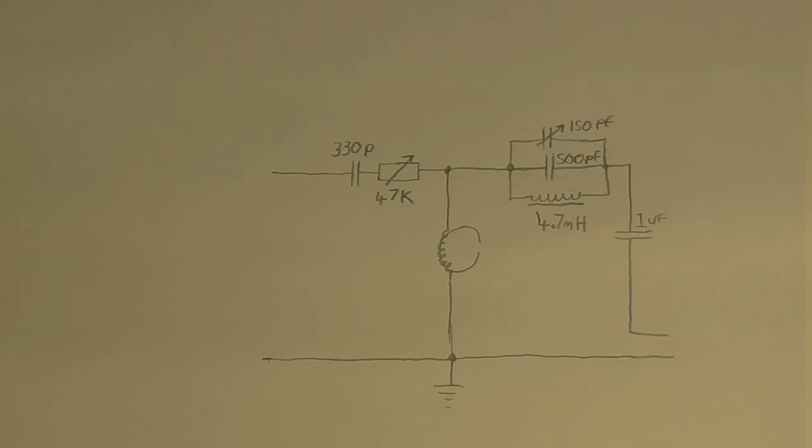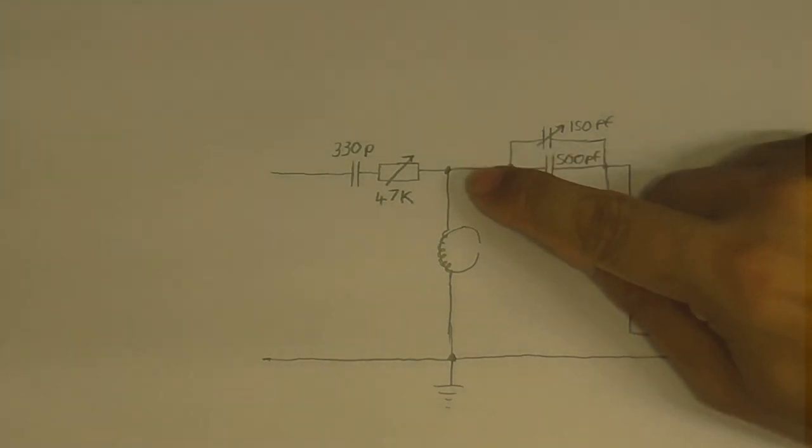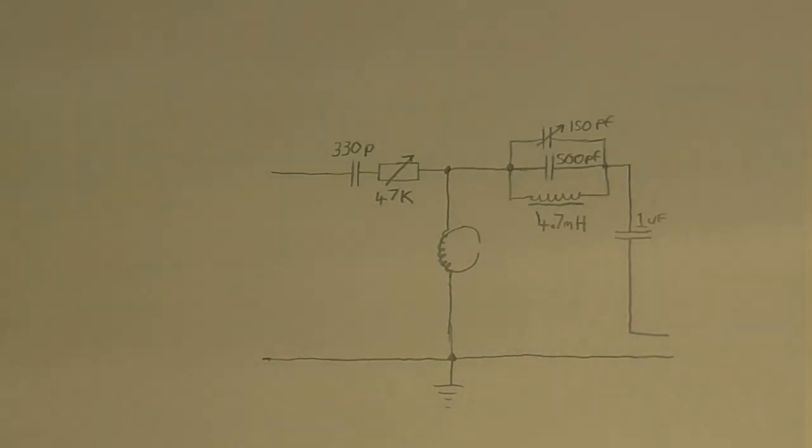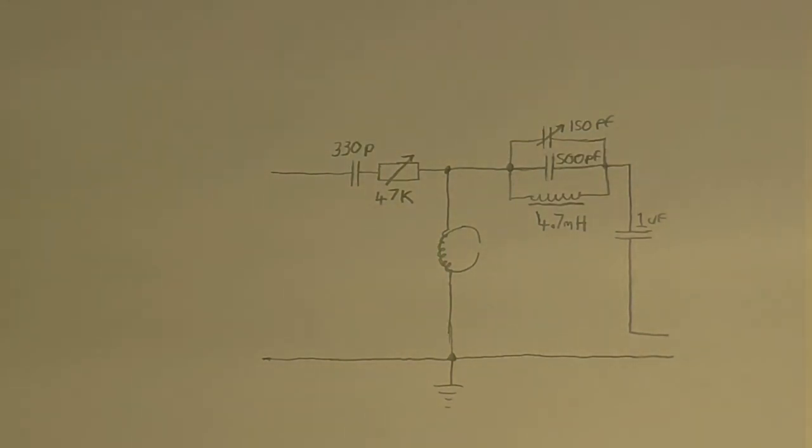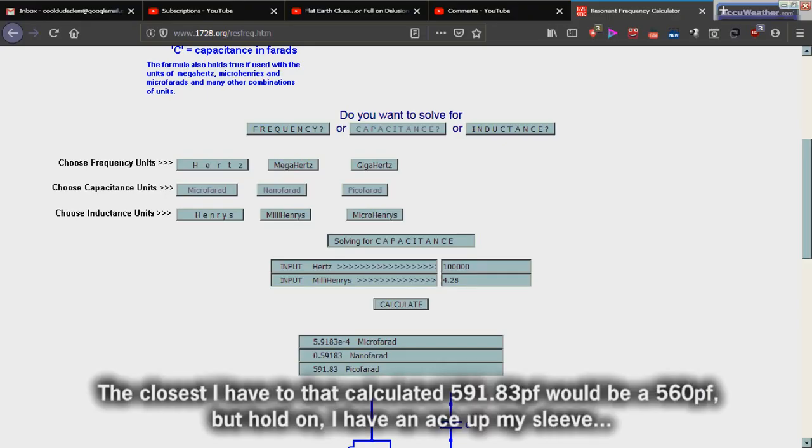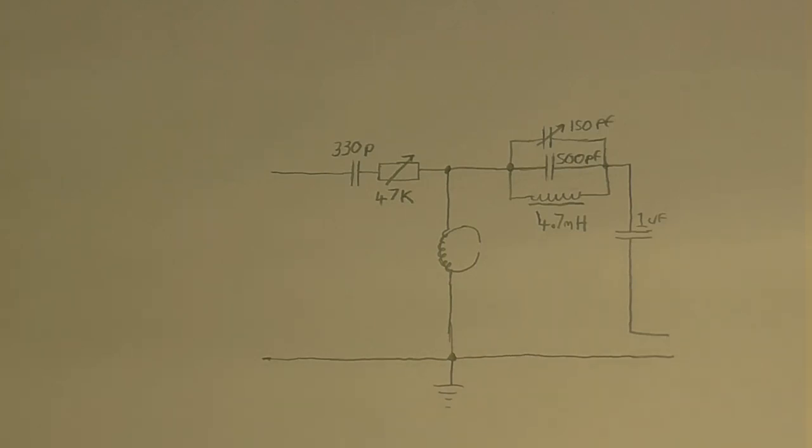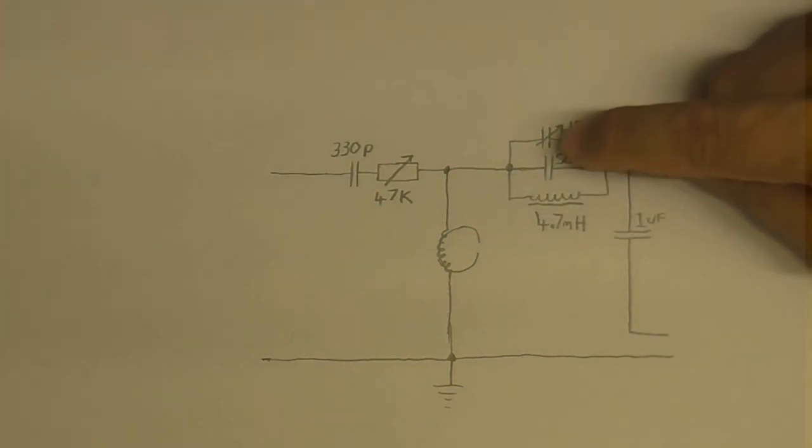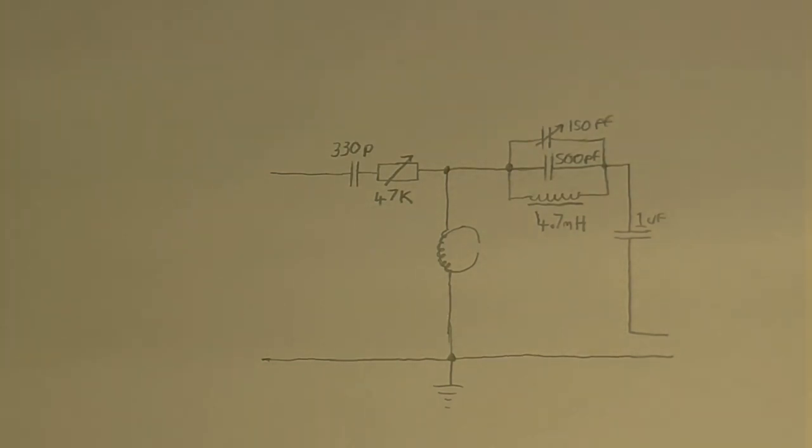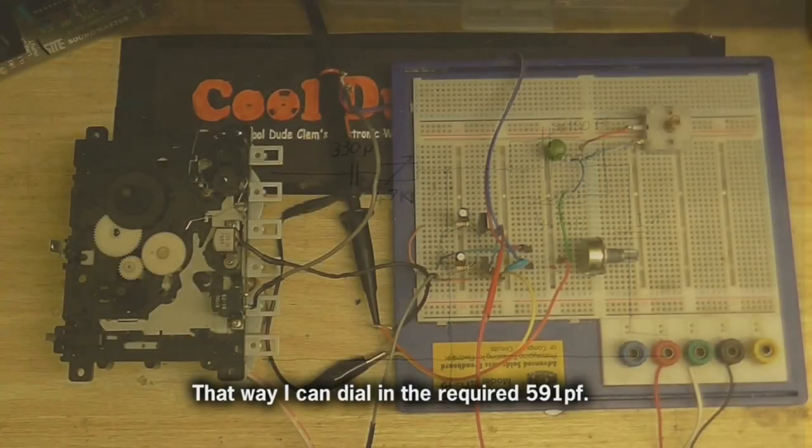And this here is called the bias trap, apparently. It indeed does what I think it did - stops the bias from getting into the audio line. So I went digging around in my parts bin. I found a 4.7 mH coil. And using an online calculator, I found the right capacitor. So this will filter out the 100 kHz bias that I have. But what I want to do is tune the bias trap so it's on the exact frequency that the bias is. So what I decided to do is put a 500 pF capacitor here, and then put that in parallel with a 150 pF variable capacitor.